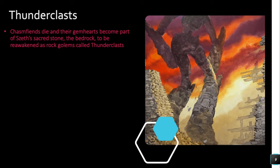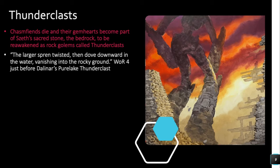We strongly suspect that chasm fiends bond a particular type of spren — the mandras — that give them extra buoyancy. Sky eels bond the same spren that allow them to fly; greatshells bond spren that allow them to float. Chasm fiends are enormous and should not be lithe and fast, yet they are, because of the mandras. When we see a Thunderclast, we see a spren that looks like a mandra but with red eyes — that's a void spren.